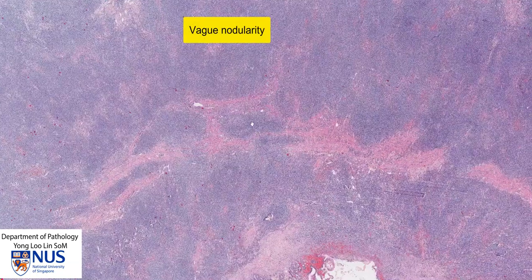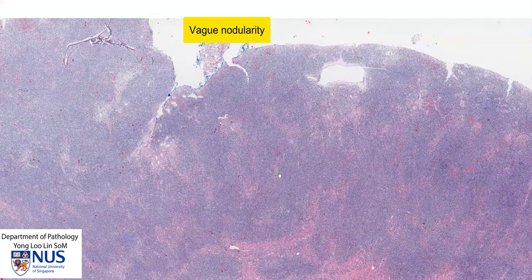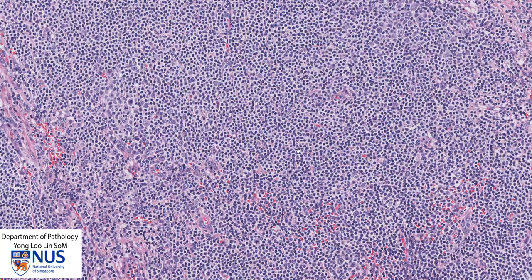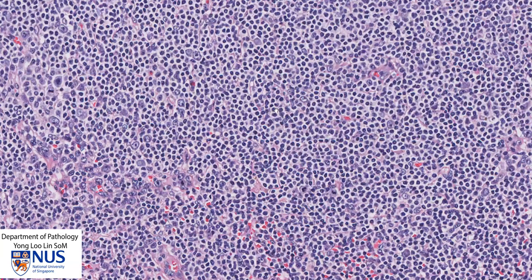Taking a closer look at the infiltrate, in many areas it appears very diffuse and formless. However, there is a vague nodularity in some areas if you look very carefully. The reason why lymphomas tend to appear blue on low magnification is because lymphocytes have very high nuclear-to-cytoplasmic ratios, meaning most of the cell is composed of the nucleus, which is blue in our H&E stain, and hence lymphomas tend to appear blue on low magnification.